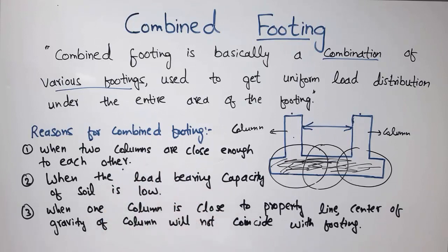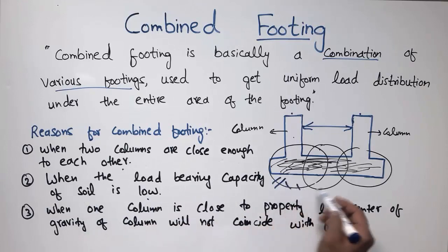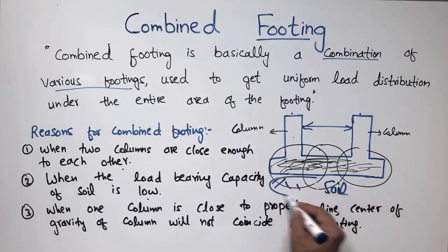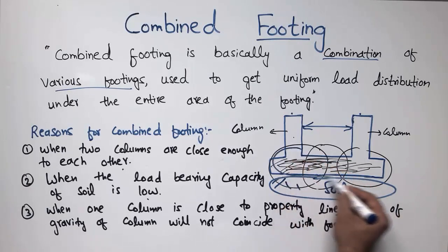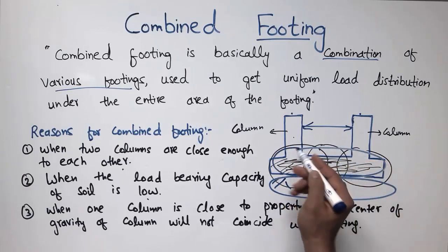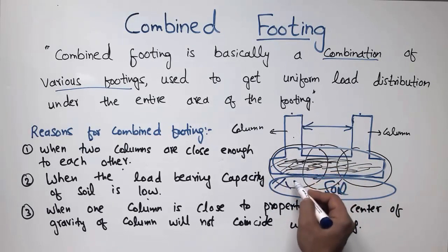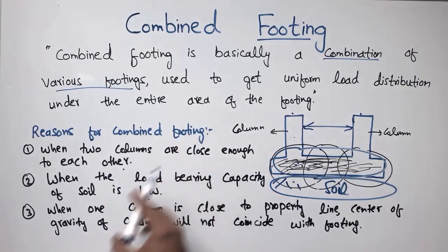The second reason is when the load-bearing capacity of the soil is low. When the bearing capacity of the soil below the footing is very low, we combine the footings of the columns to increase the stiffness of the footing, so it can take the load and transfer it to the soil properly.